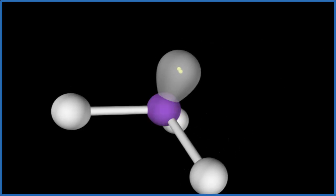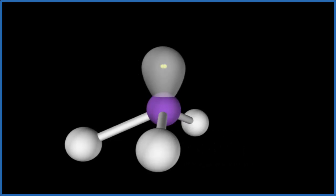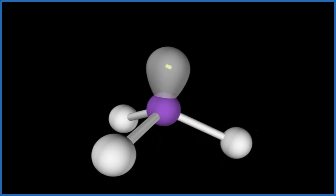Since that occupies space, it'll push these hydrogens down. So now we have this trigonal pyramidal molecular geometry with this lone pair up here and these three hydrogens kind of down at the bottom here.